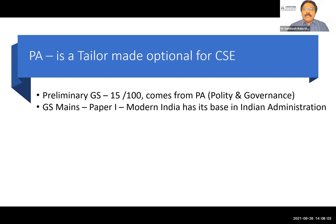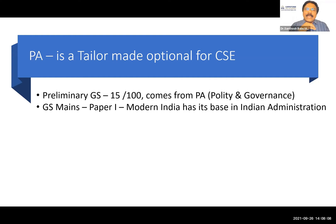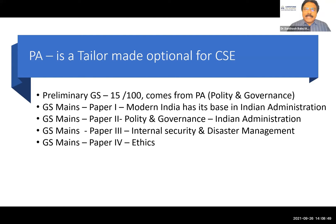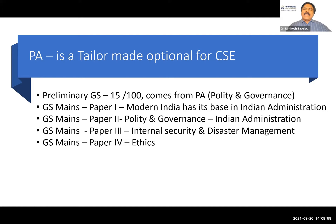For GS mains paper 1, modern India has its base in Indian administration — right from the constitution to the Prime Minister's office, the President's office, judiciary, legislature, the CM's office, the chief secretary. The entire modern India comes from Indian administration, which is part of paper 1. Paper 2 covers policy and governance and Indian administration again. Paper 3, internal security and disaster management, is a complete chapter in paper 2 of public administration. So paper 3 of GS mains is covered in that.